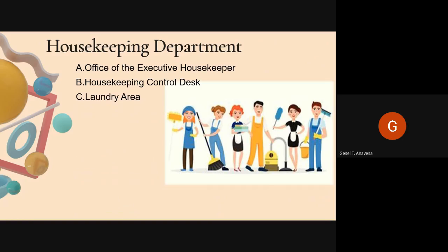The Laundry Area is the place in the hotel where washing, pressing, dry cleaning, and folding of linen and staff uniforms take place. The Linen Room is where the hotel's linen is stored, collected, and circulated throughout the hotel. It usually has a counter for the exchange of linen and should be located next to the laundry so that the supply of linen is quick and smooth.